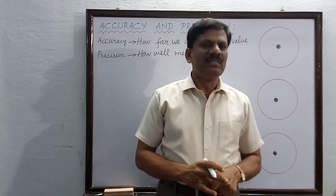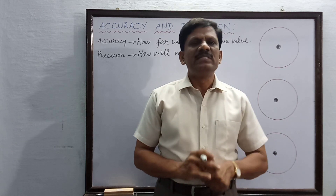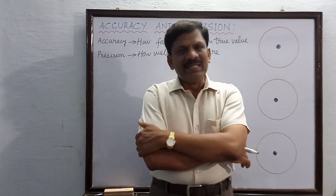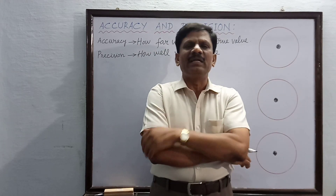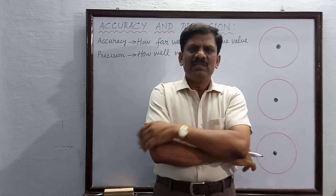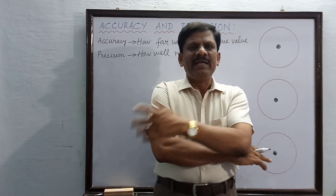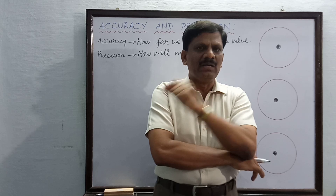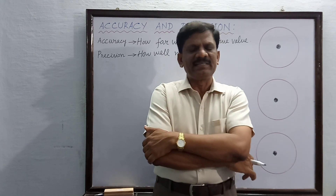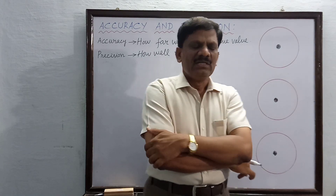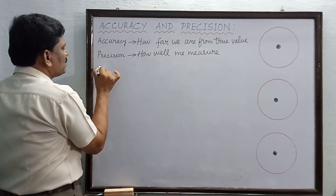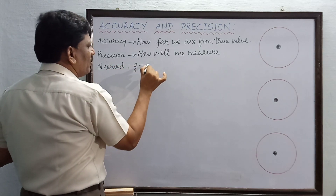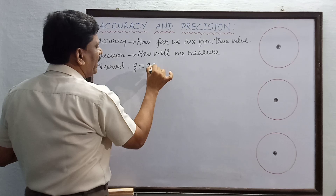For example, you are doing an experiment to determine the acceleration due to gravity in the physics lab using a simple pendulum. You take different lengths: 50 cm, 60 cm, 70 cm, 80 cm, 90 cm, and finally 1 meter. For each length, you find the value of the acceleration due to gravity. Let's look at the observed values of g.